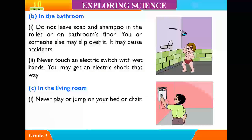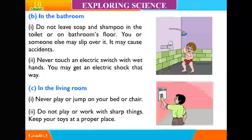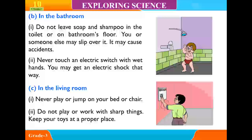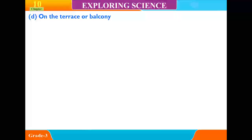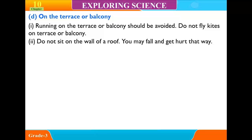C. In the living room. First: never play or jump on your bed or chair. Second: do not play or work with sharp knives. Keep your toys at a proper place. D. On the terrace or balcony. First: running on the terrace or balcony should be avoided. Do not fly kites on the terrace or balcony. Second: do not sit on the wall. You may fall and get hurt that way.